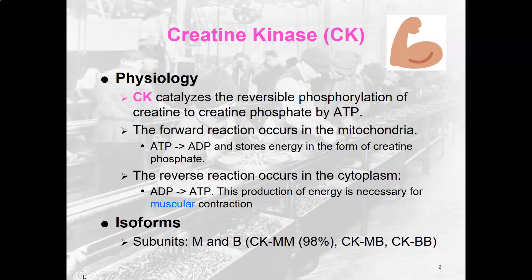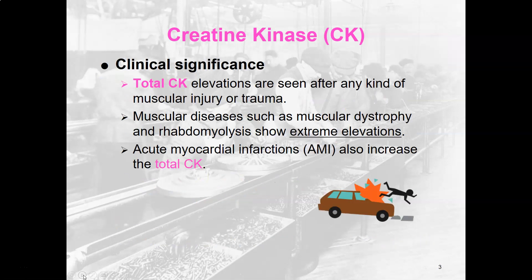There are several isoforms for creatine kinase. They have two subunits: M and B. CK-MM is usually about 98% of circulating CK, coming from skeletal muscle — M for muscle. CK-MB, muscle-brain, actually comes from the heart. CK-BB is usually from the brain.